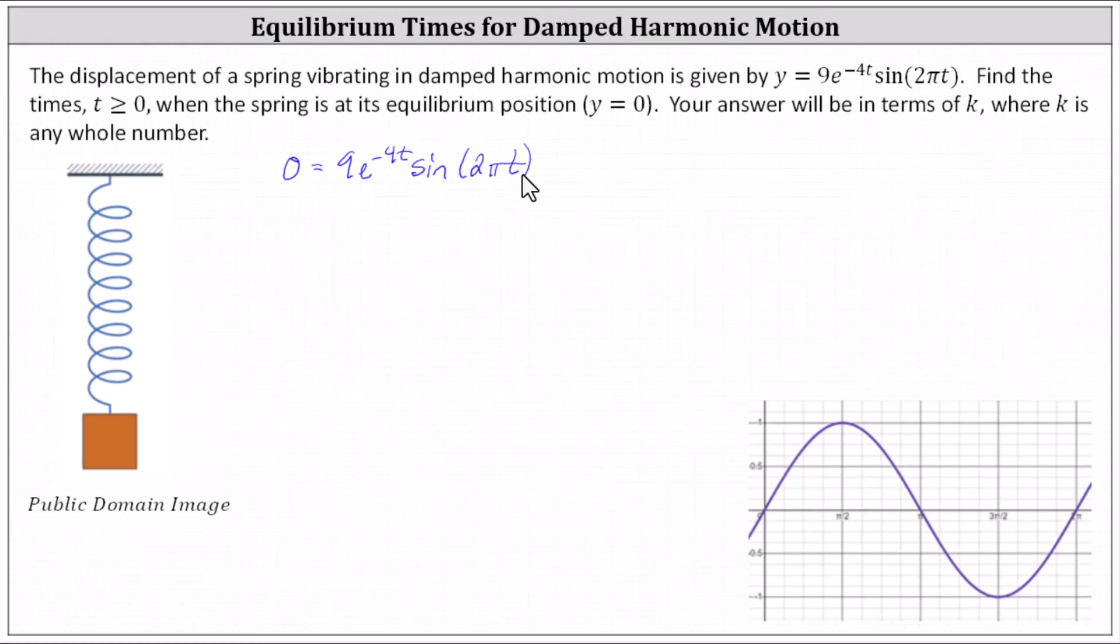The right side of the equation equals zero when nine e to the power of negative 4t equals zero, or when sine 2πt equals zero. For the first equation, we should recognize e to any power is never going to be zero, and therefore there are no values of t where nine e to the power of negative 4t equals zero, which indicates we don't get any solutions for t from this part of the equation.